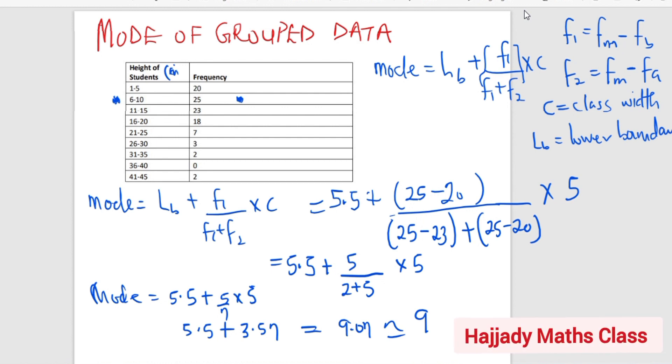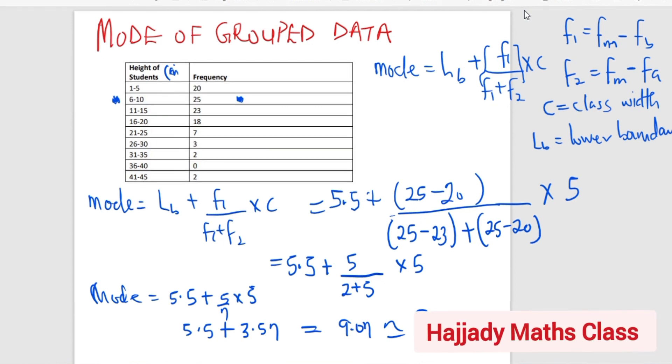So this is our frequency for the modal class. And our final answer here is 9. Thank you very much, and please don't forget to subscribe to my channel. In our next video, we are going to move straight, because we are done with the measure of central tendency. We are moving straight to measure of dispersion.